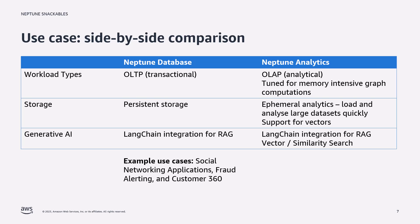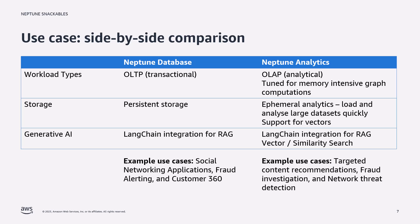Some common use cases for Neptune database are things like social networking, fraud alerting, and customer 360 — effectively where you're using deterministic methods to traverse the graph. Some common use cases for Neptune Analytics are things like targeted content recommendations, fraud investigation, and network threat detection, where you want to quickly analyze large amounts of data to gain additional insights such as community detection or fraud and threat analysis.